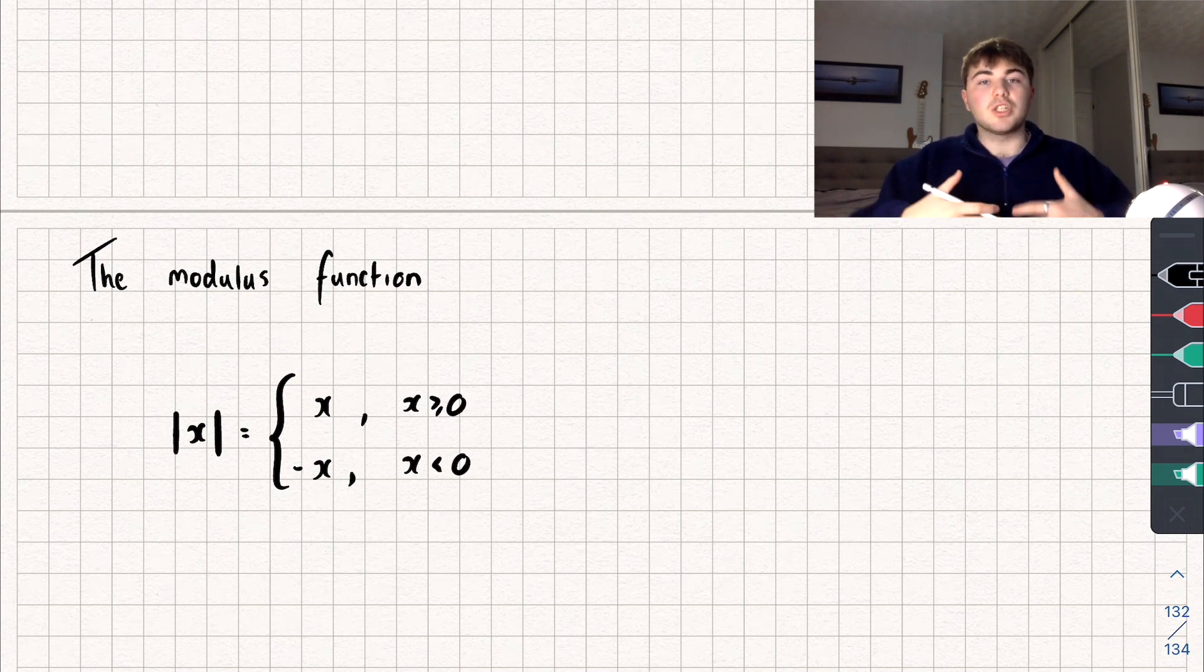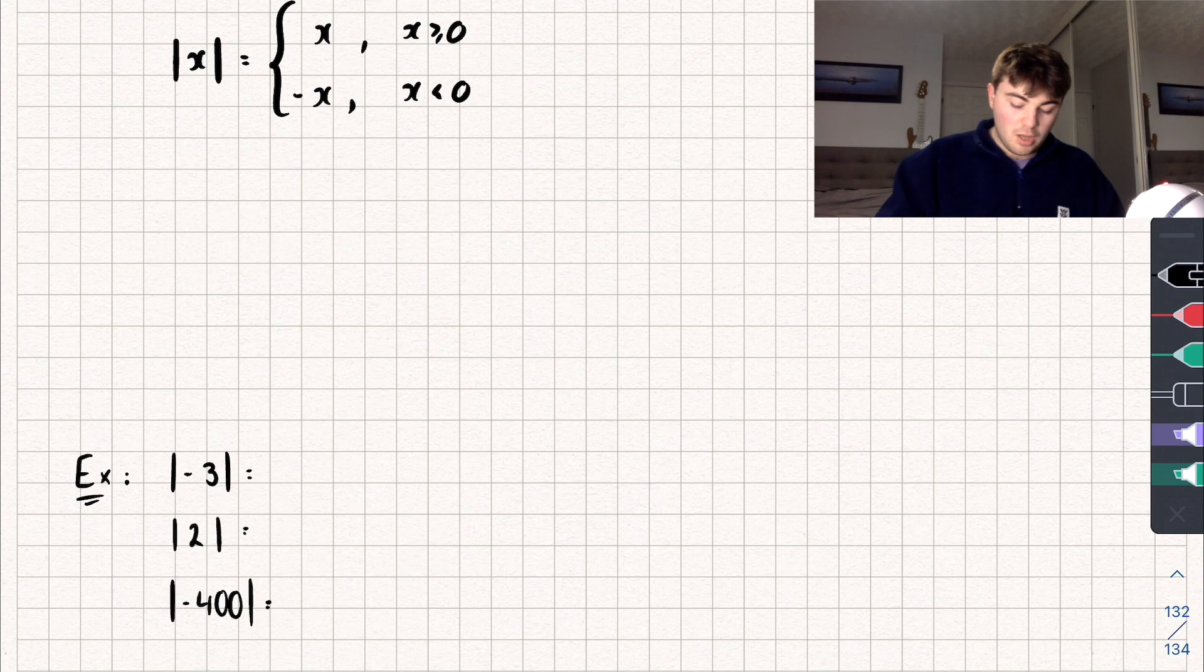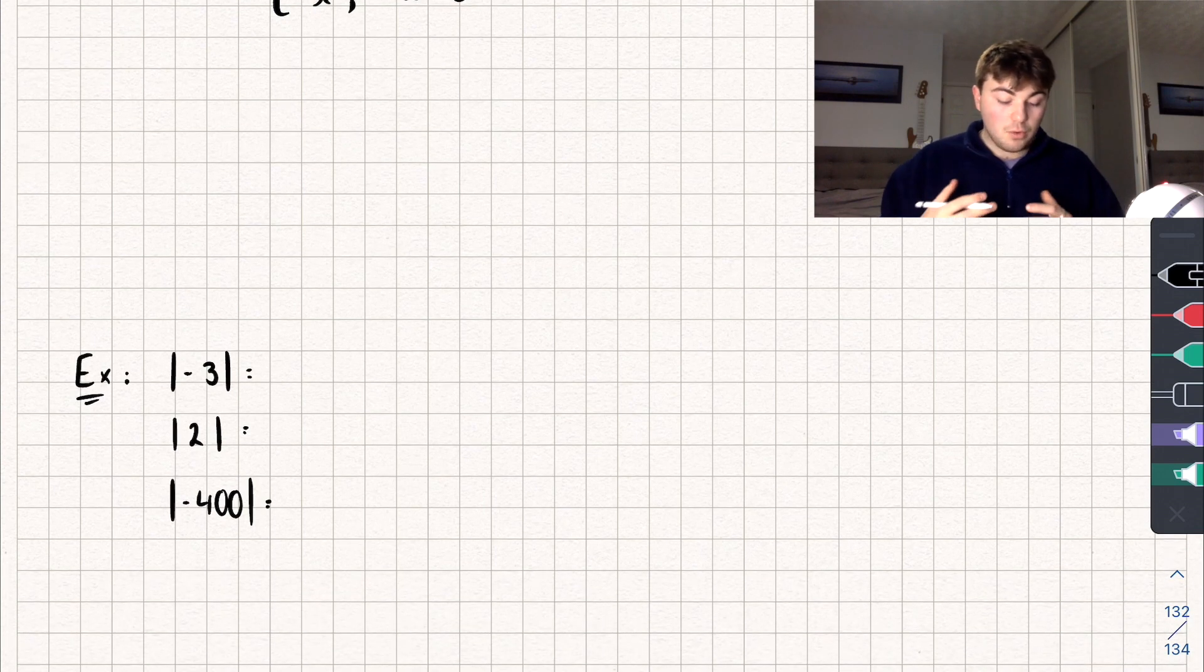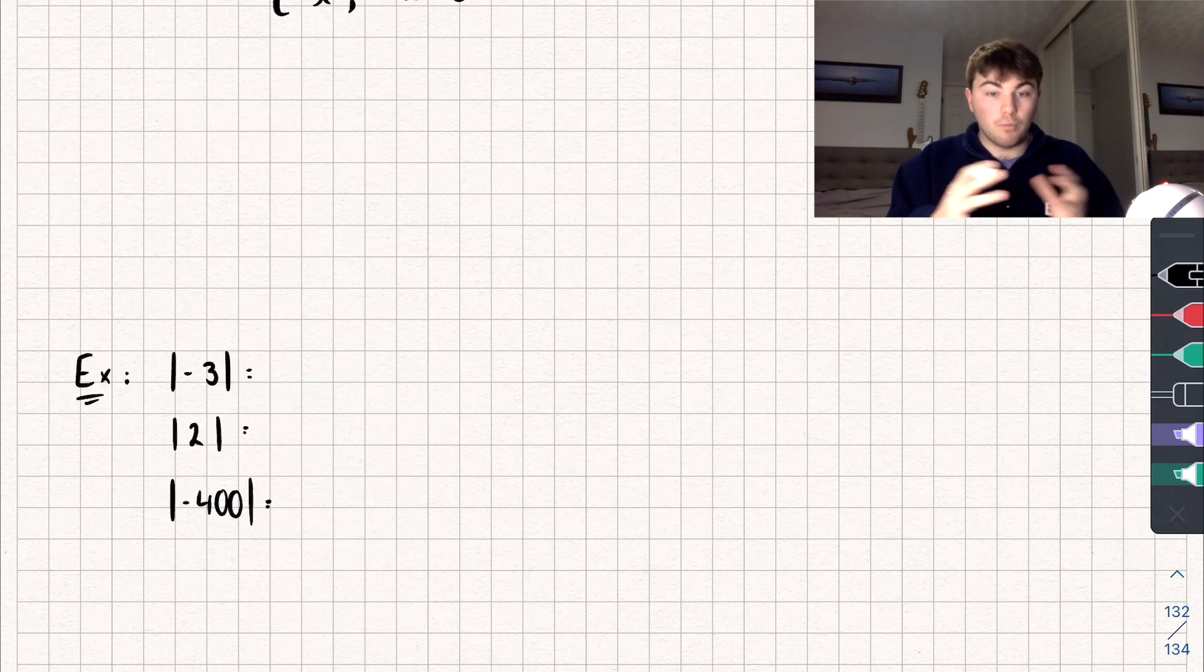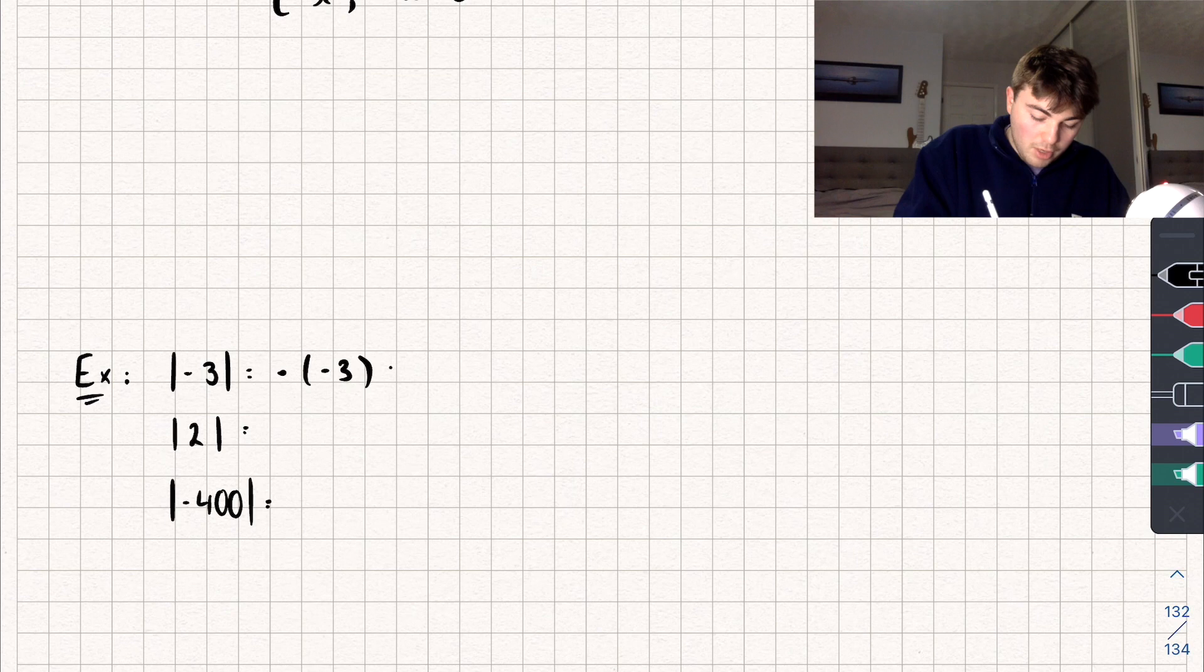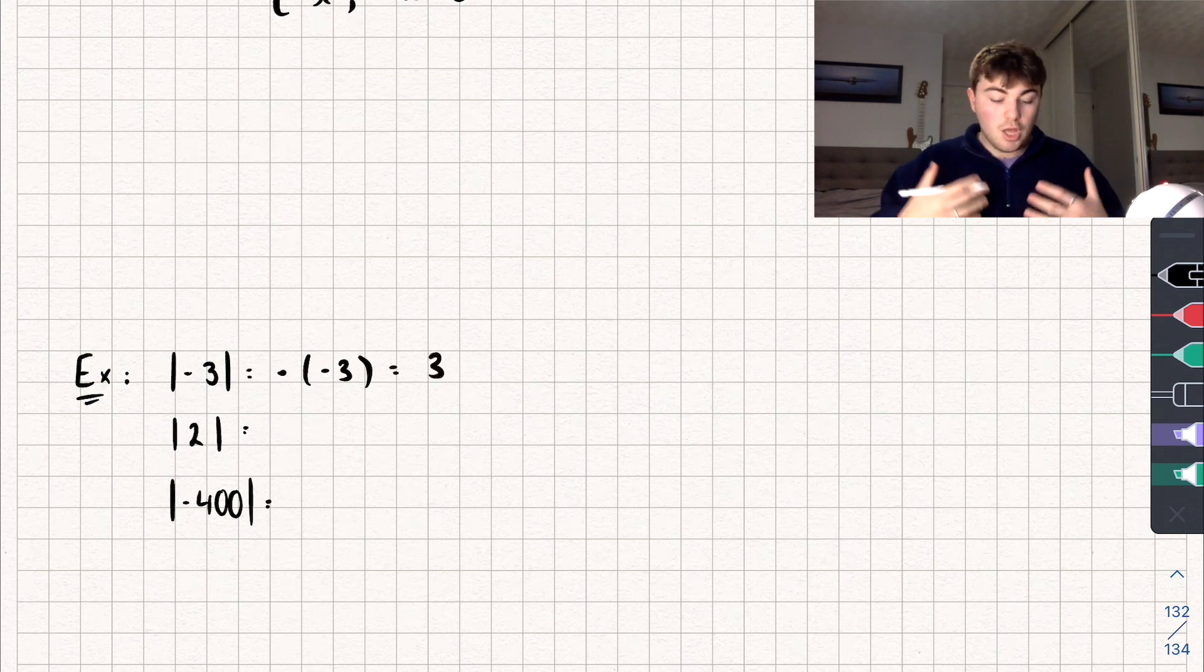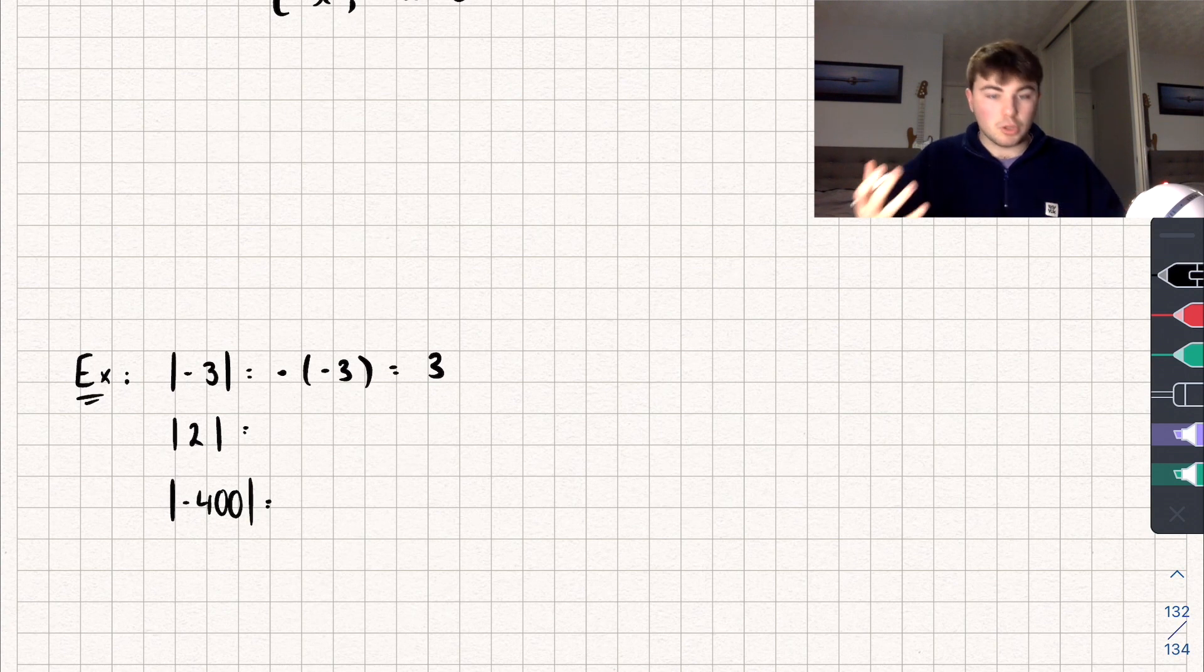So let's see what this function is actually doing in practice. Say I want to find the value of the modulus of negative 3. Well negative 3 is strictly less than 0, and so the modulus function is going to say we'll take the negative of whatever is in the modulus. So it's going to become negative negative 3, and this is now going to become positive 3. So the modulus of negative 3 is just positive 3.